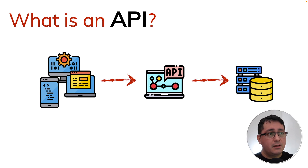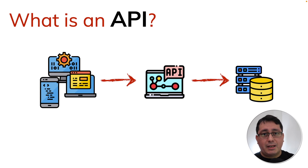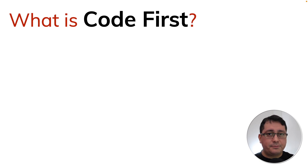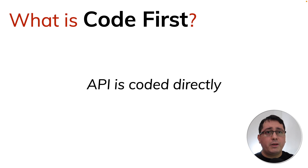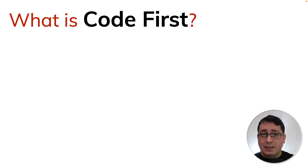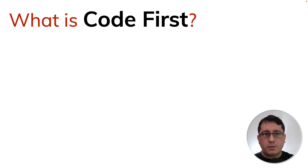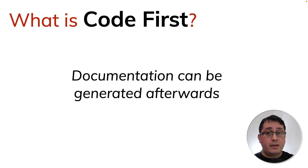Those resources could be a database or some other kind of stored information behind the API. Now, what is the code-first approach? It's a traditional approach that consists of coding the API directly, where the documentation is generated afterwards. I'm mentioning documentation because in this case I'm going to be discussing Swagger, and Swagger 2.0 specifically.